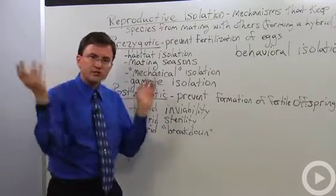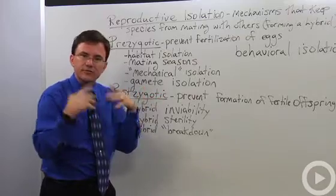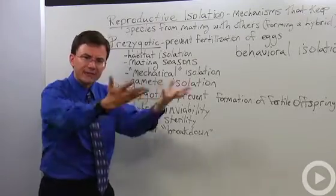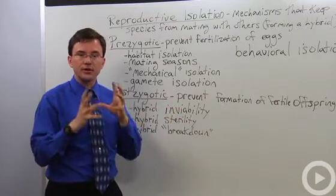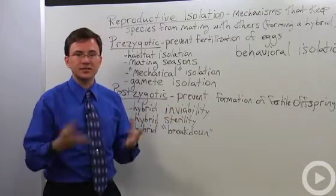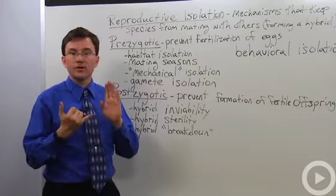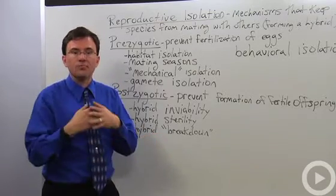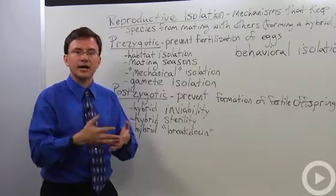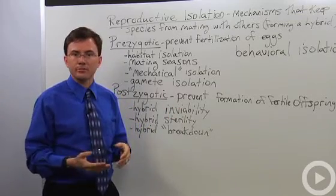Postzygotic. Finally, you've somehow managed to get the egg and sperm together of two different species. But what prevents that from developing? Well, a lot of times you wind up creating a hybrid of those two species that is simply not viable. Whether it dies even before being born, or maybe it's weak and unable to survive long on its own. Not very competitive.